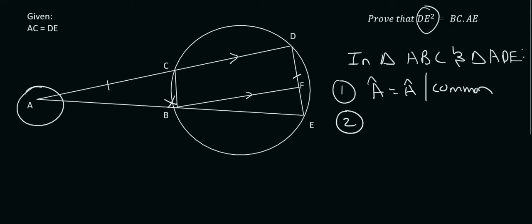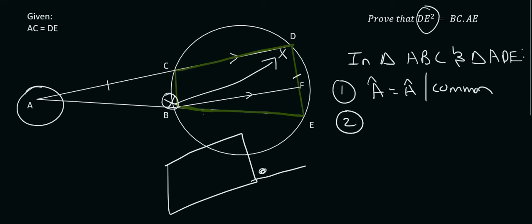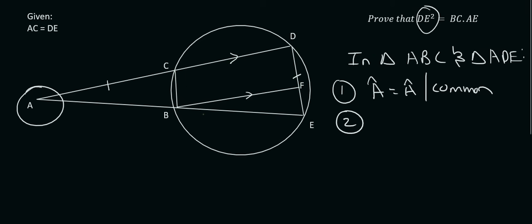Number two, this angle over here is going to be the same as this angle over here. That is due to the fact that angle B is on the outside of this cyclic quadrilateral. Remember from grade 11, we know that the exterior angle of a cyclic quadrilateral is always equal to the interior opposite angle.